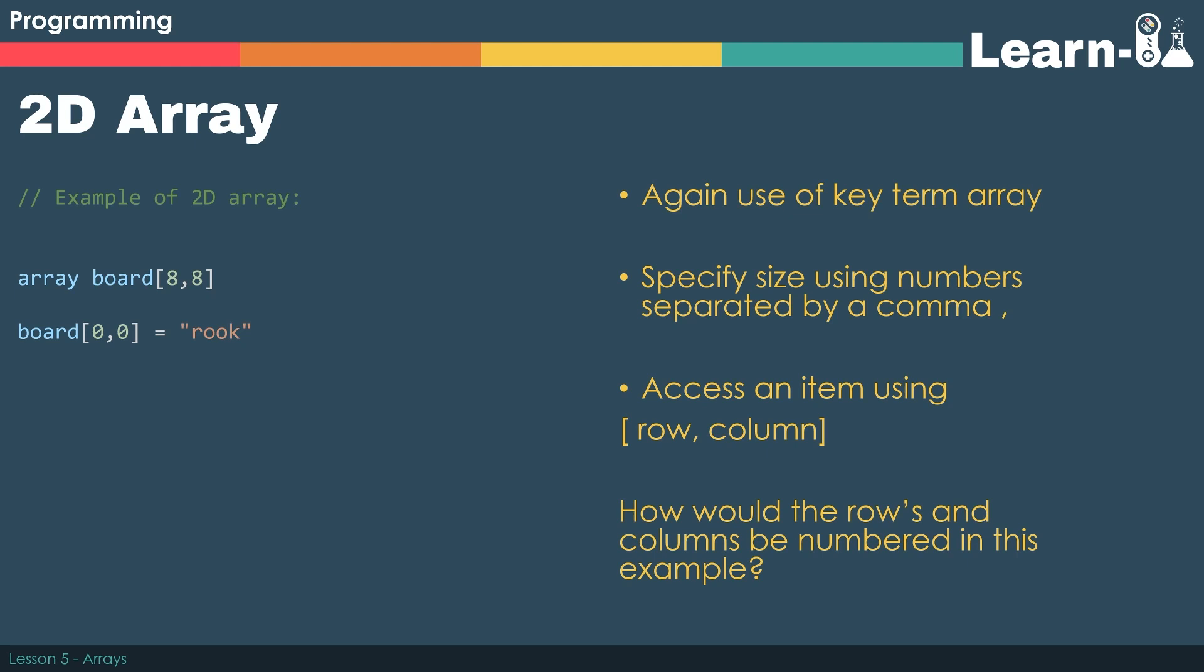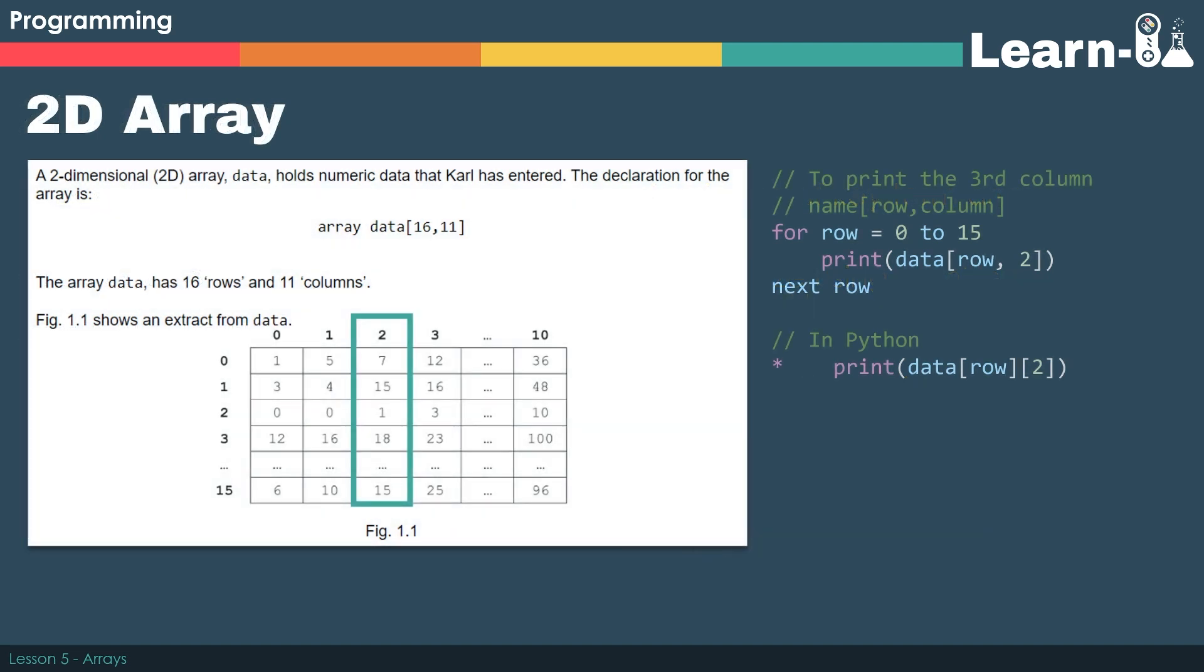Have a think. Hopefully you worked out that we'd go from 0 to 7 for both the row and the column. In this exam question we've got an array. It's been declared as having a name of data and it's got 16 rows followed by 11 columns.